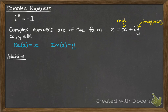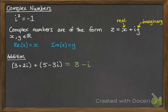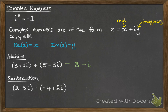We can do addition with complex numbers, and it's exactly what you would expect — it's like collecting up like terms. You add together the real parts, you add together the imaginary parts, and write down what you get. Same with subtraction. So, we have 2 minus minus 4 gives us 6, and minus 5i minus 2i is minus 7i.